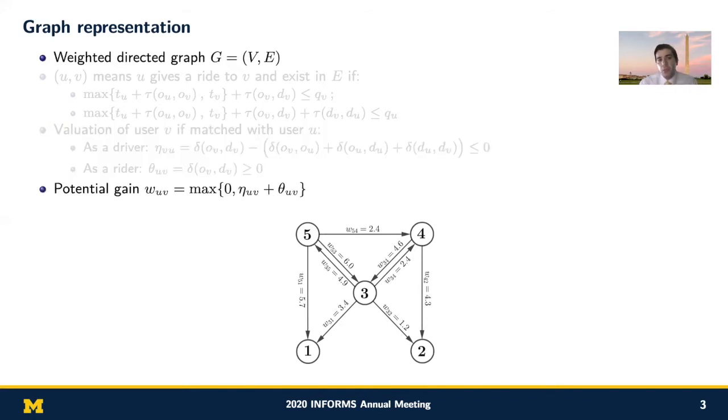Finally, the weight of an edge is the sum of valuations of users involved in that match. Based on our definition, it actually is equal to the vehicle miles travel saving, VMTS, but here we refer to it as the potential gain, and it must be always positive because otherwise it is not rational for these participants to share their rides together.